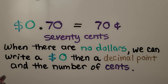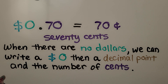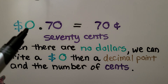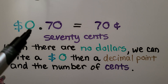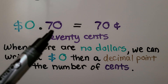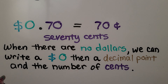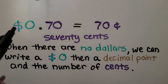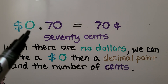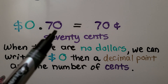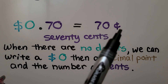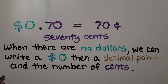If we just have 70 cents and there are no dollars, we can write a dollar sign and a zero for where the dollars would go, then the decimal point and 70. We could also write 70 cents with the cent symbol, but we can't use both signs. We either write it with a dollar sign, the number of dollars, a decimal point, and the number of cents, or the number of cents with just the cent symbol.